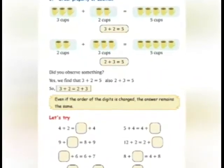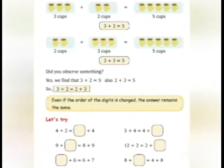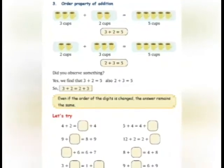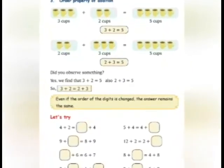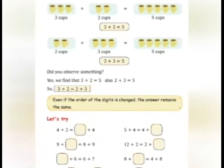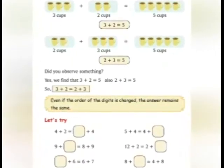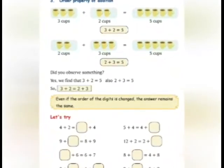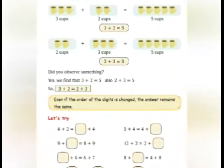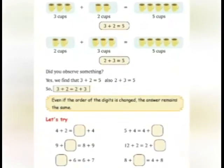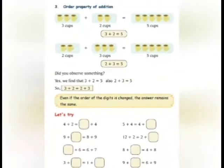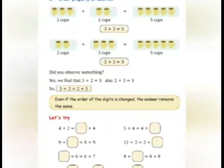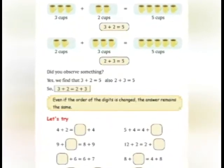9 plus dash is equal to 8 plus 9 — 9 दोनों side है, तो क्या missing है? 8. 12 plus 2 is equal to 2 plus dash — very good, 12. Dash plus 6 is equal to 6 plus 7 — yes, very good, 7. 8 plus dash is equal to 4 plus 8 — 8 दोनों में common है, right side में हमारा 4 है, तो left side में क्या जाएगा? Yes, very good — 4.